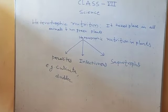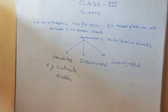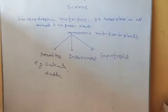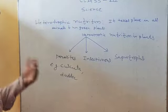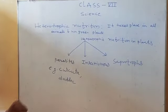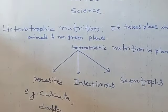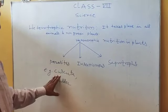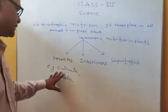Parasitic plants are those plants which live on other plants and take food and shelter from that particular plant. The plant on which it lives is called the host plant, and the dependent plant is called the parasitic plant. These plants live on that particular plant and take food and shelter.